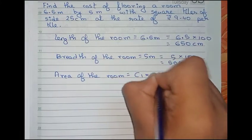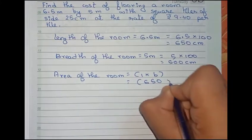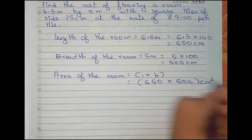Therefore, area of the room is equal to length into breadth. That is equal to 650 into 500 centimeter square. Keep it like this only.